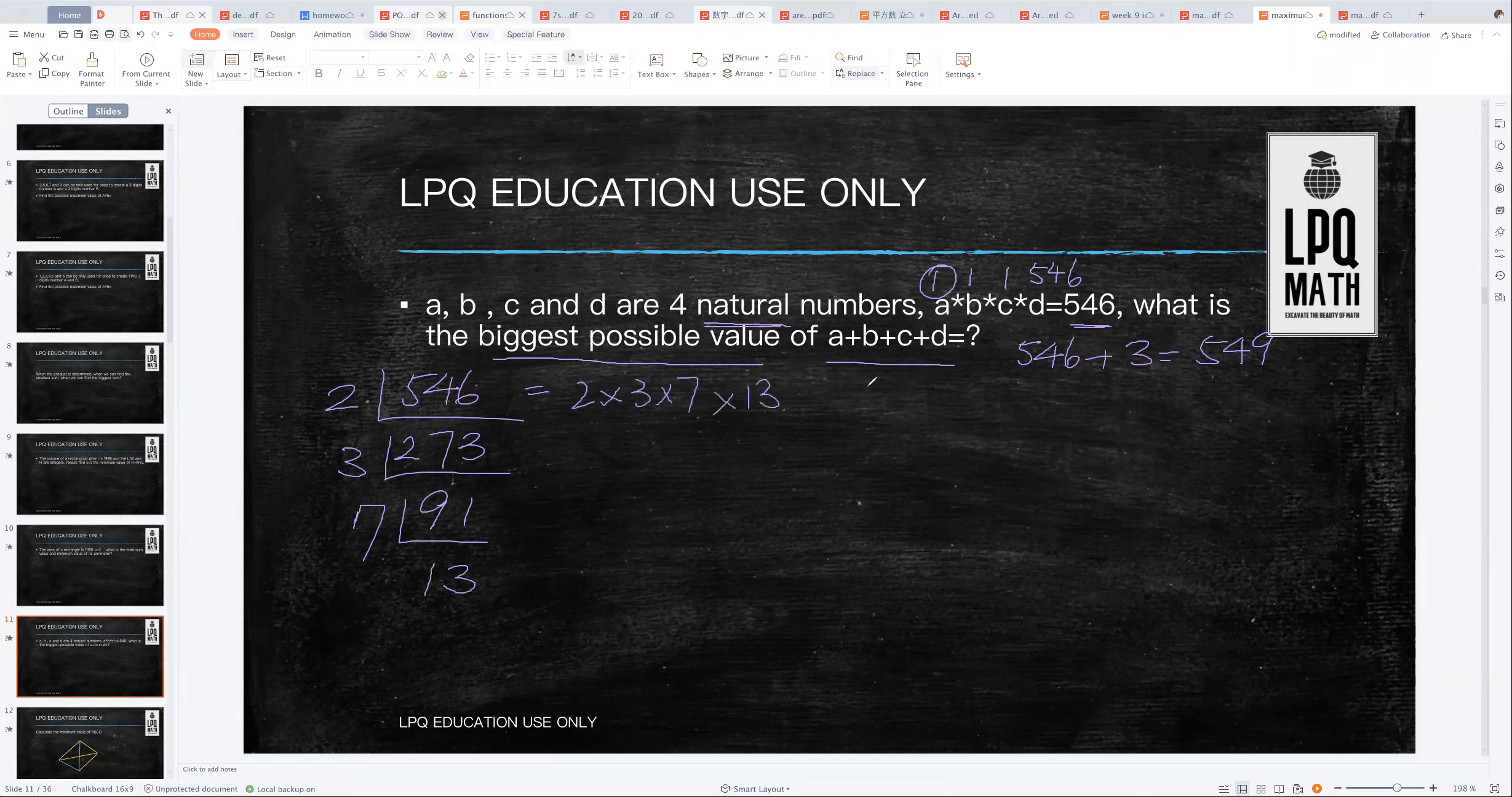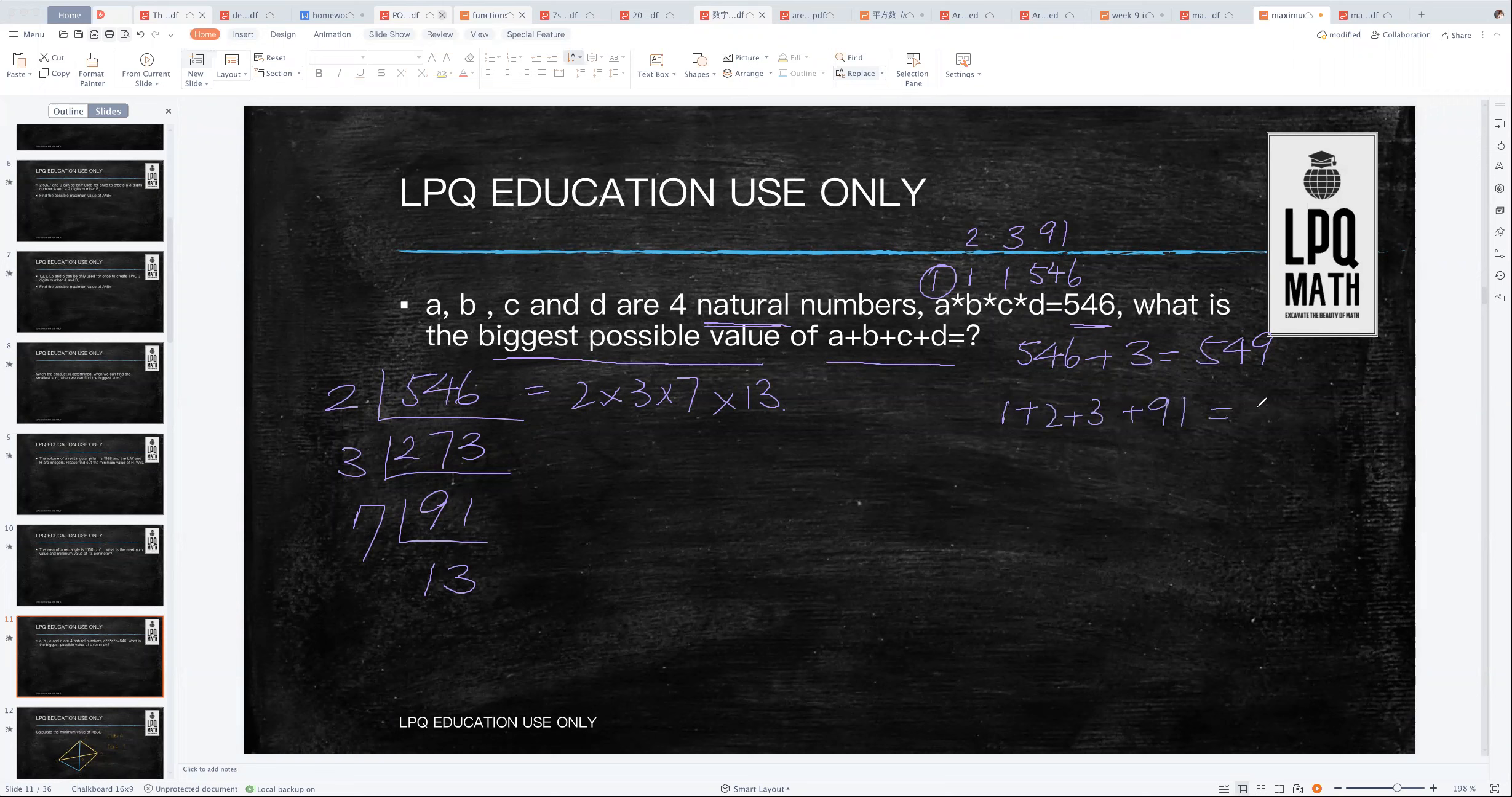This one equals 2 times 3 times 7 times 13. In order to make the difference the bigger the better, I'm going to put 2 and 3 and 91. So you put them together: 1 plus 2 plus 3 plus 91. So the answer is 97.